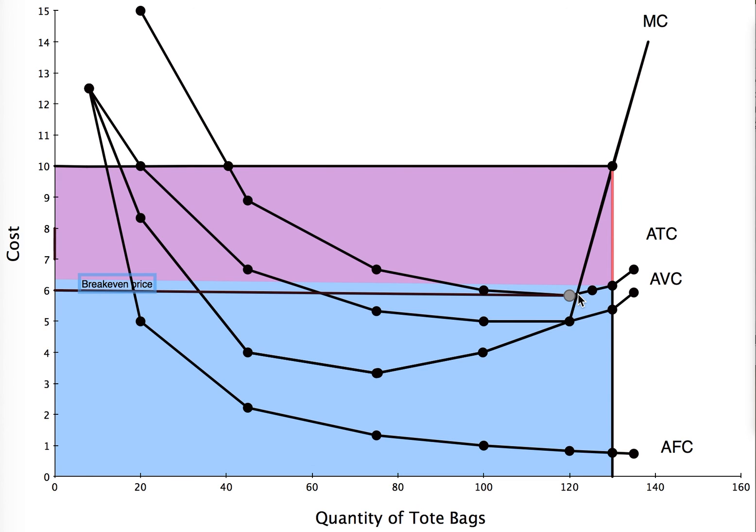If your price is above break-even, you are making economic profit, and if it's below break-even, you have an economic loss.